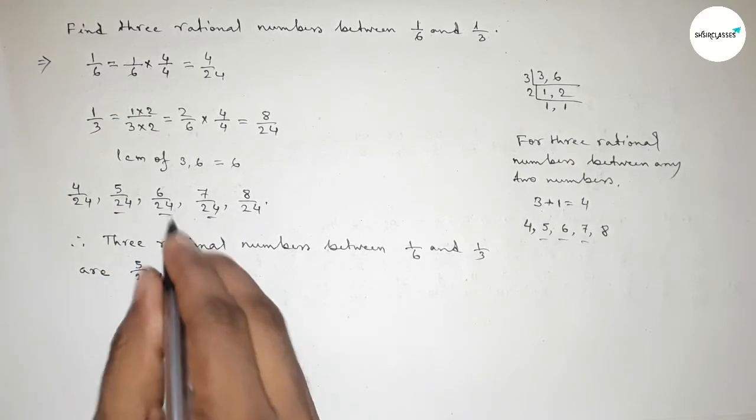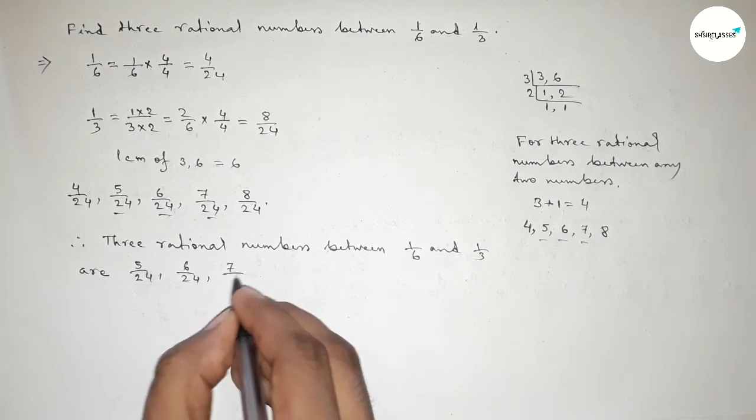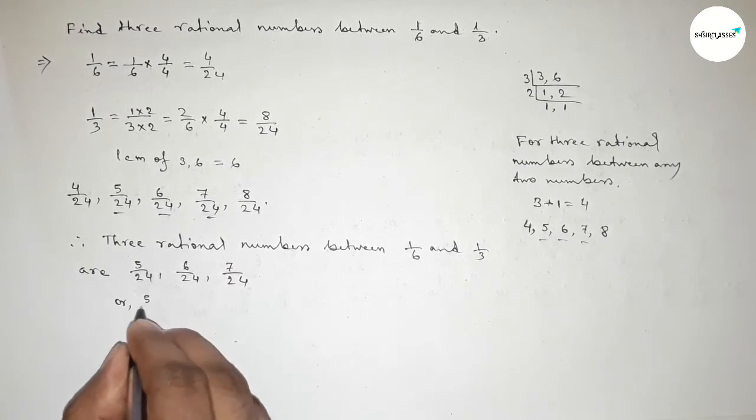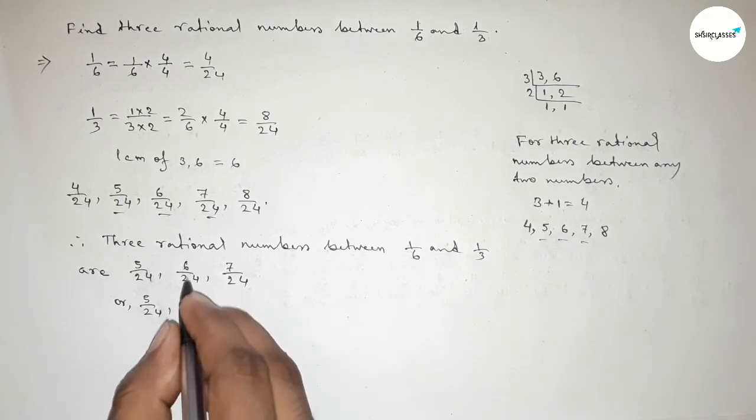First one: 5 over 24, 6 over 24, and 7 over 24. Or we can write 5 over 24, and if we divide both numbers by 6, then 1 over 4, and this is 7 over 24.